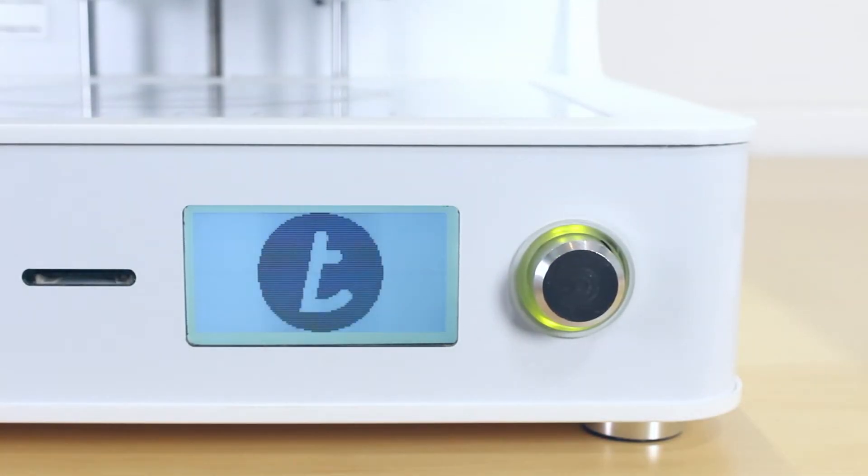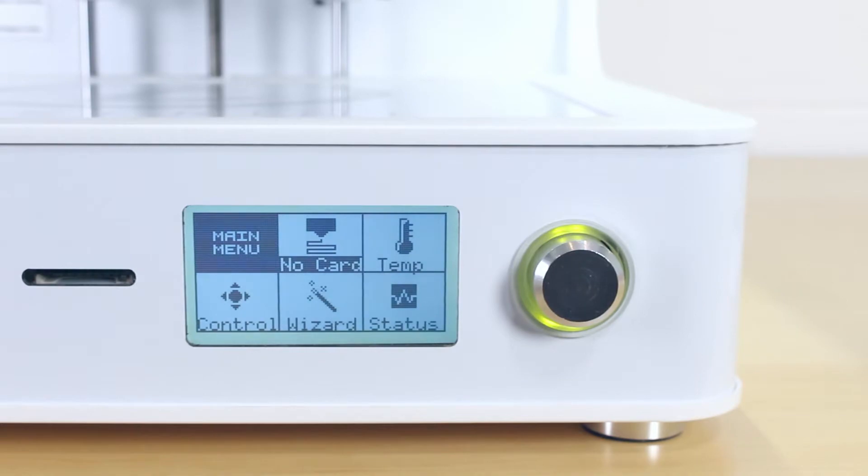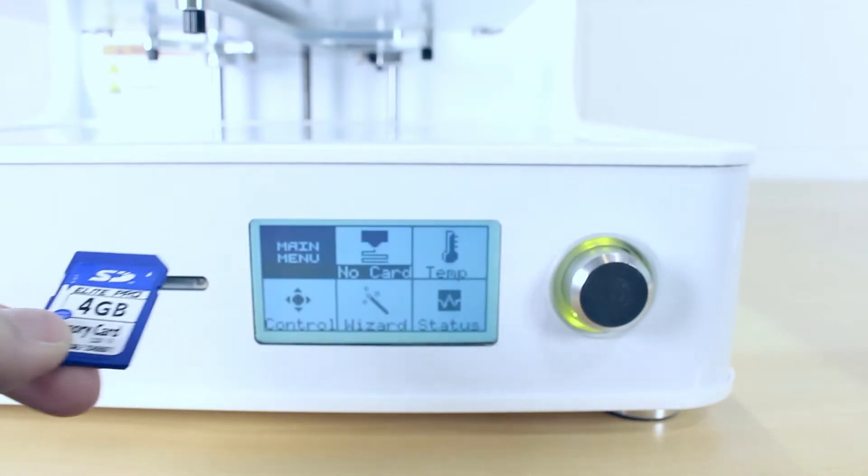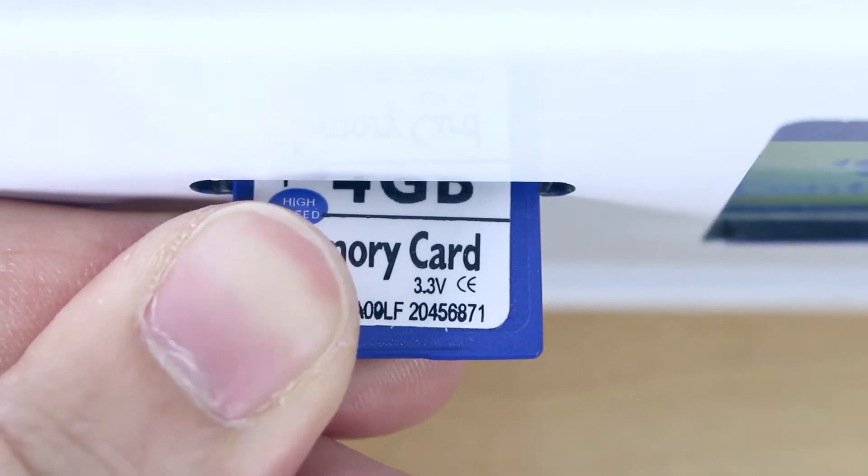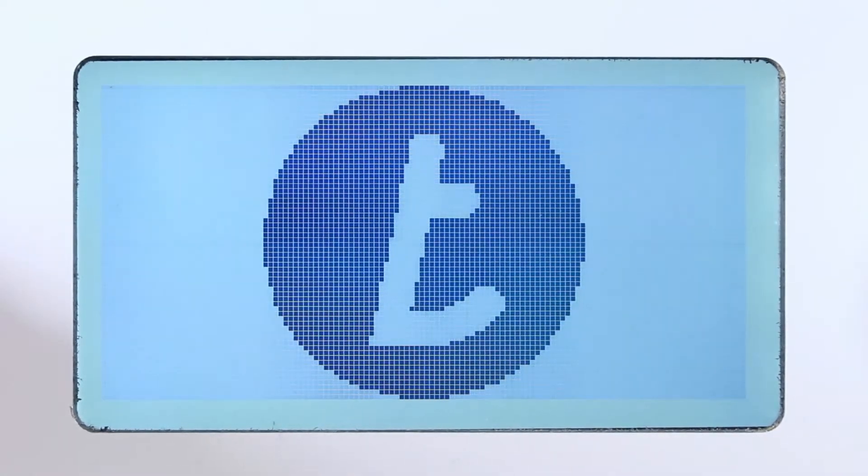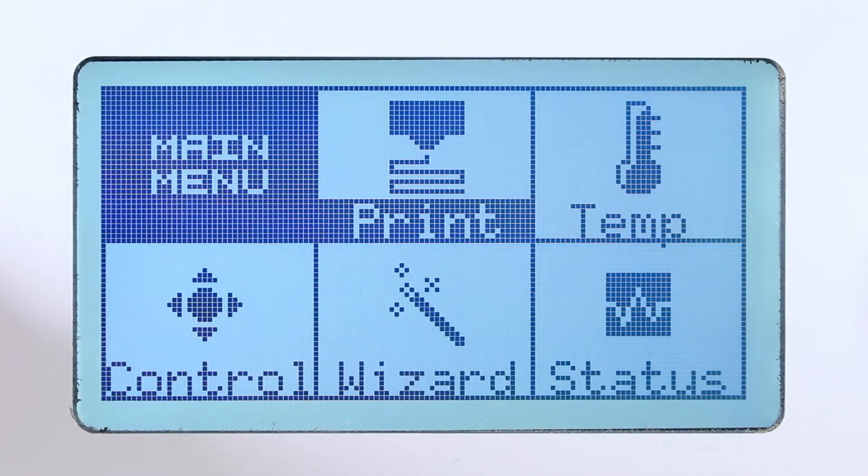First, turn on your printer. Now take your SD card and put it into the slot. Make sure it is firmly sitting inside the slot. The LCD menu should indicate print now instead of no card.